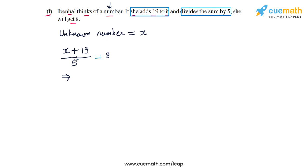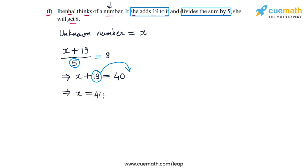To solve, we first multiply both sides by 5, giving x plus 19 equals 40. Then we transpose 19 to the right side so that it becomes minus 19, giving x equals 40 minus 19, which is 21. We can verify: adding 19 to 21 gives 40, and dividing 40 by 5 gives 8. So the answer for part f is 21.